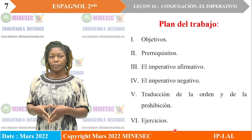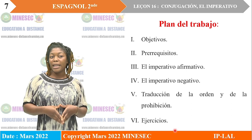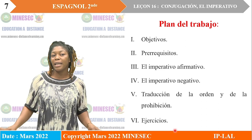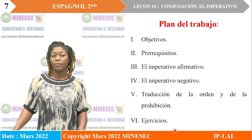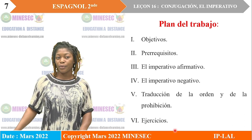El segundo nivel, vamos a evocar los prerequisitos. Vamos a hablar del tercer nivel, del imperativo afirmativo. Y el cuarto, el imperativo negativo. Vamos a seguir con la traducción de la orden y de la prohibición. Y para acabar, acabaremos con ejercicios.